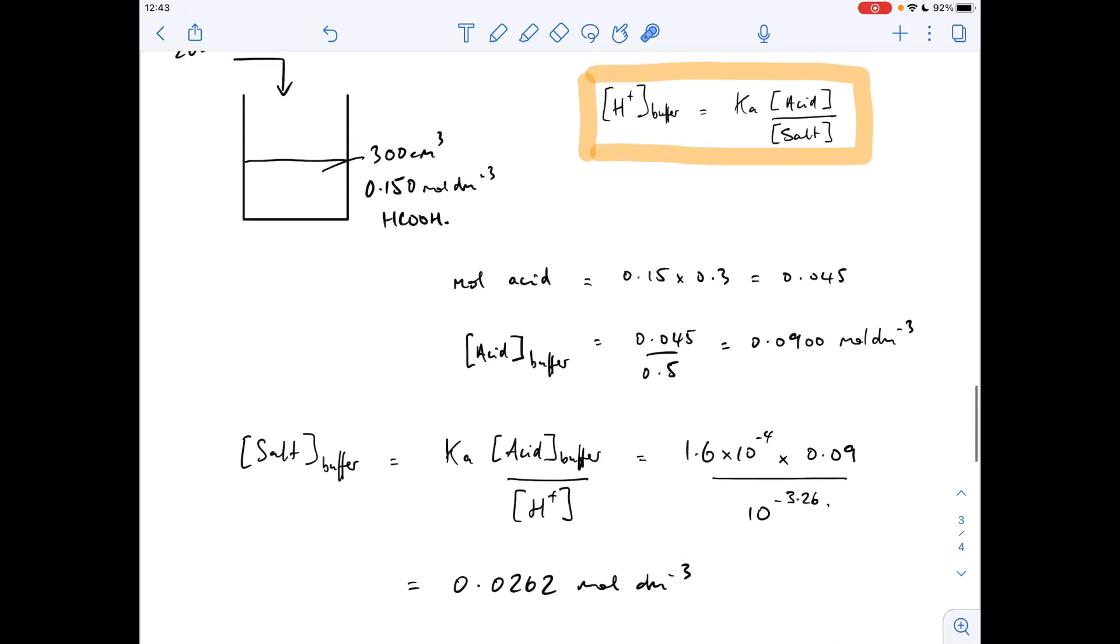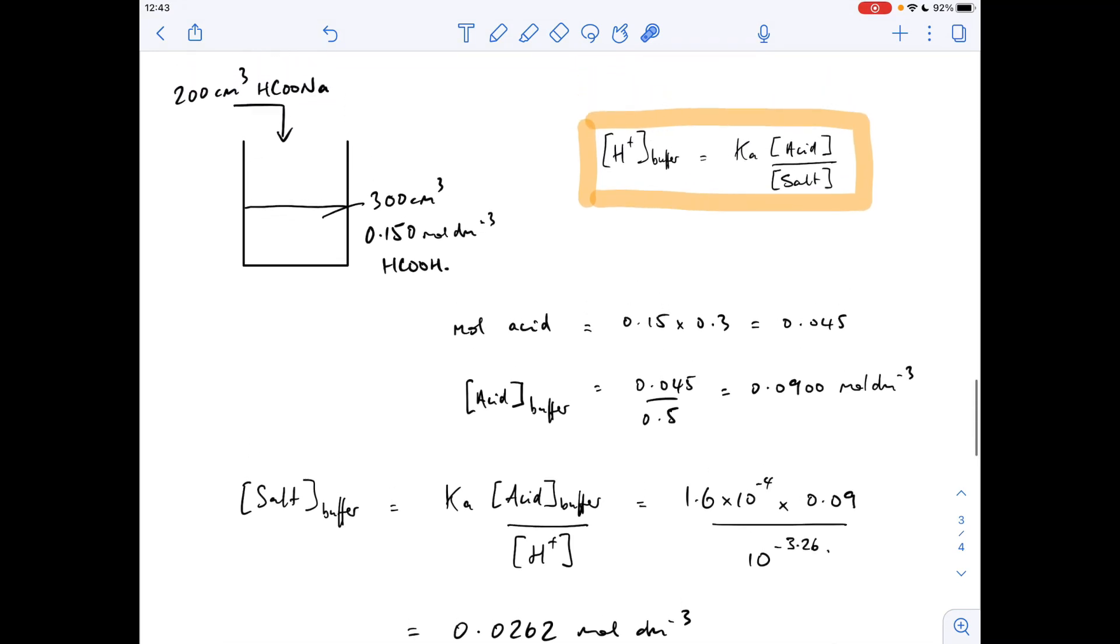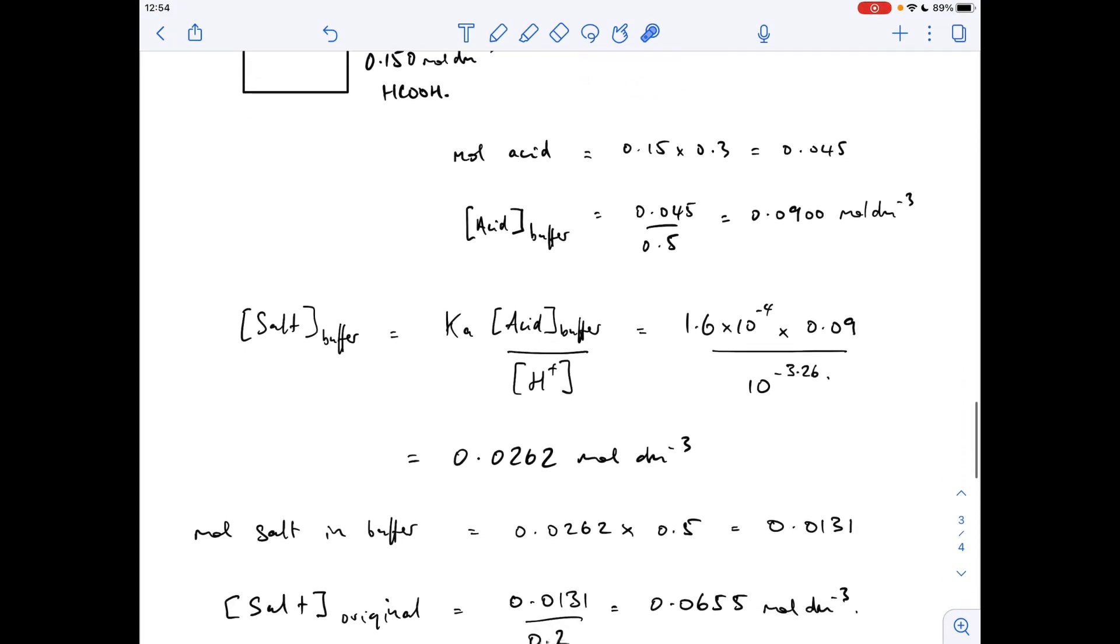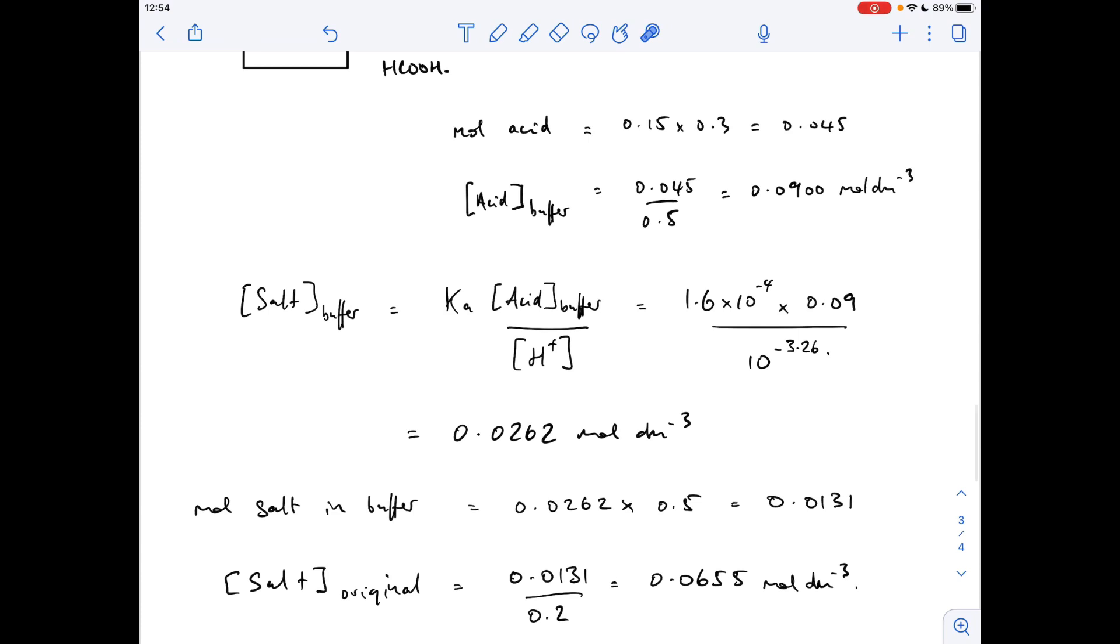So those moles have come from this 200 cm cubed of salt, so we'll work out, well, what concentration that salt needs to be to provide those moles. So that's done by moles over the original volume of the salt. So that was 200 cm cubed, 0.2 dm cubed. So the original salt concentration needs to be 0.0655 moles per decimeter cubed.